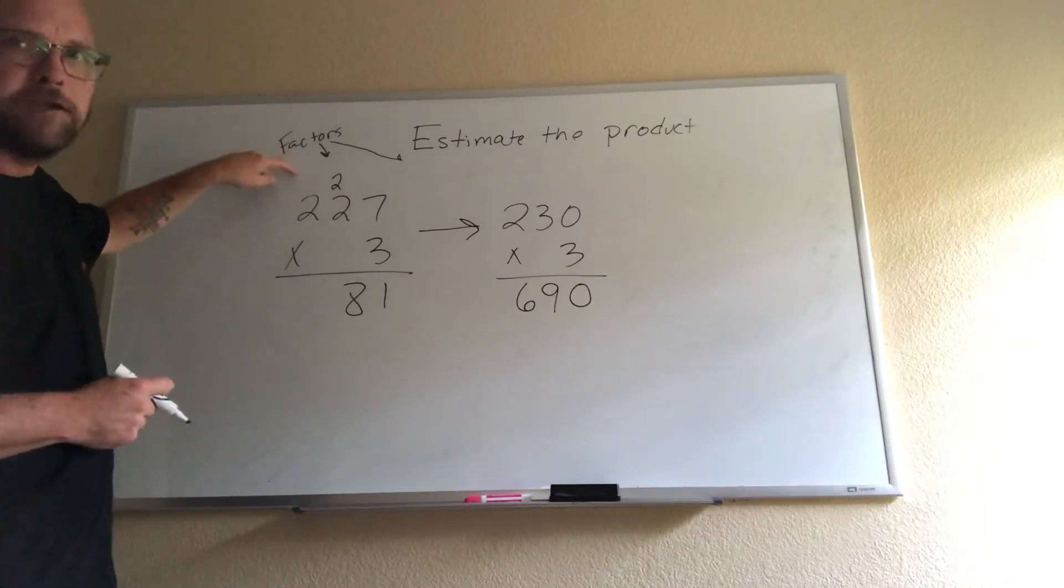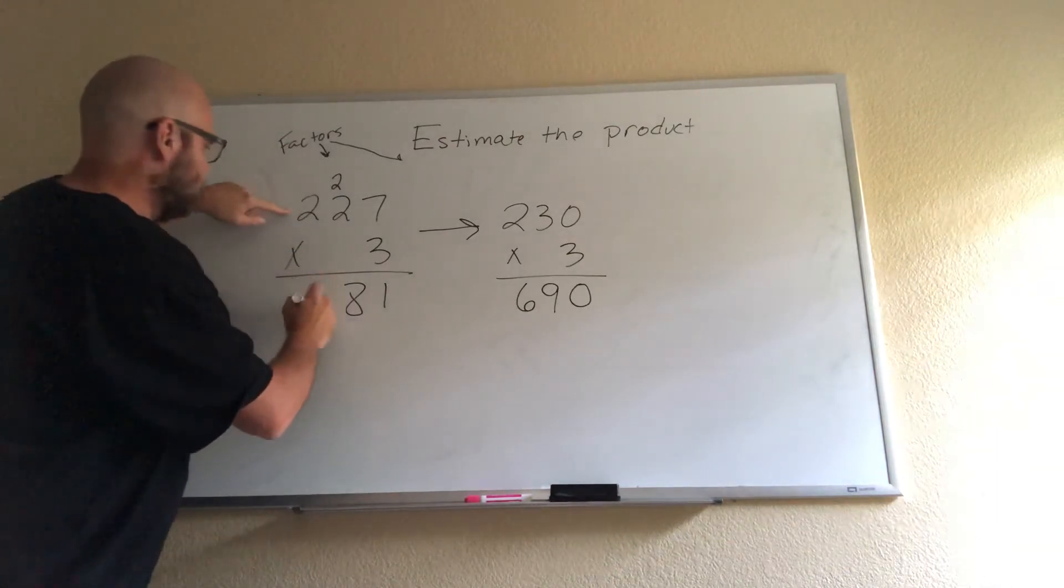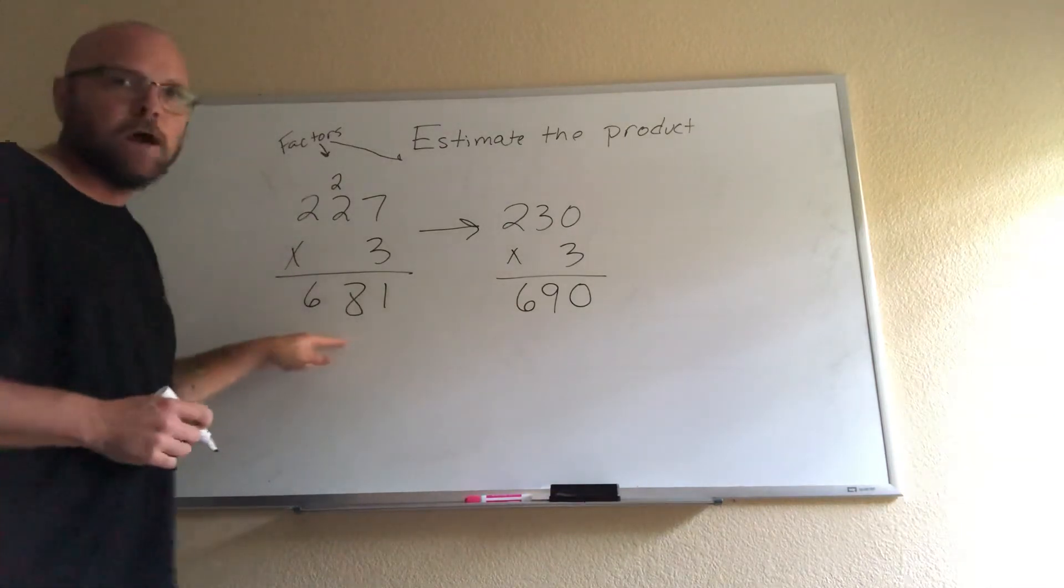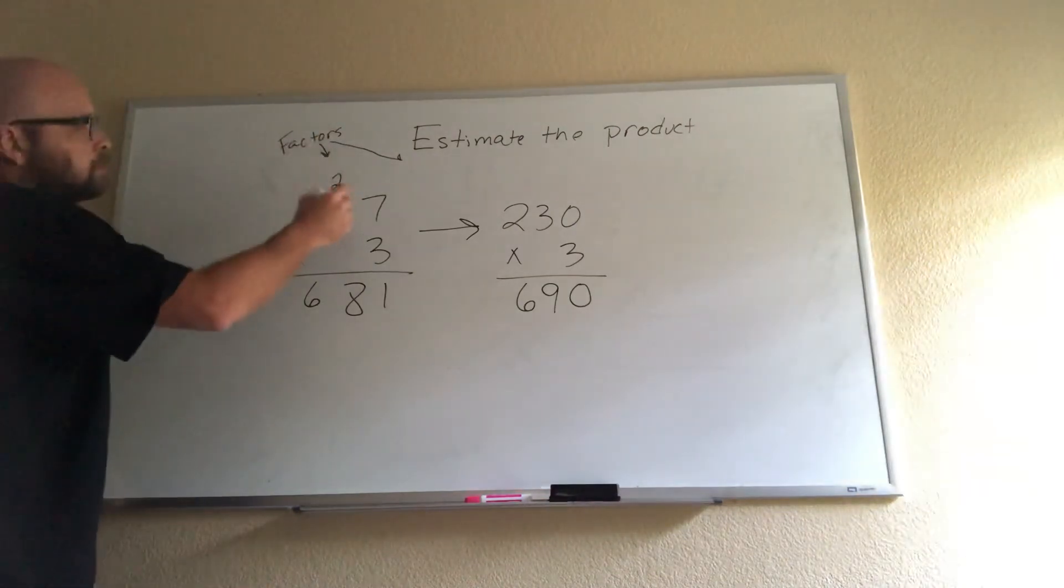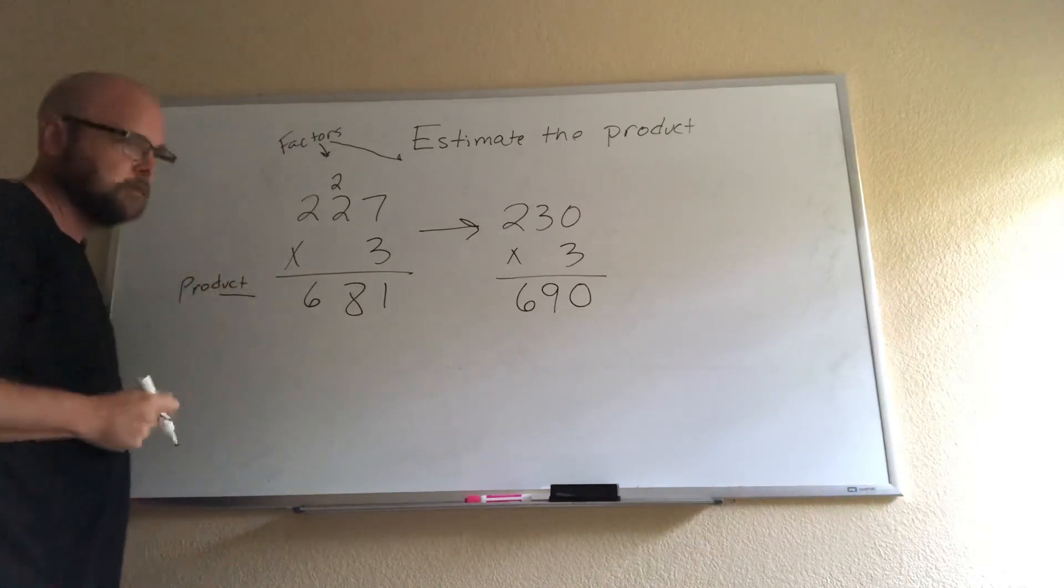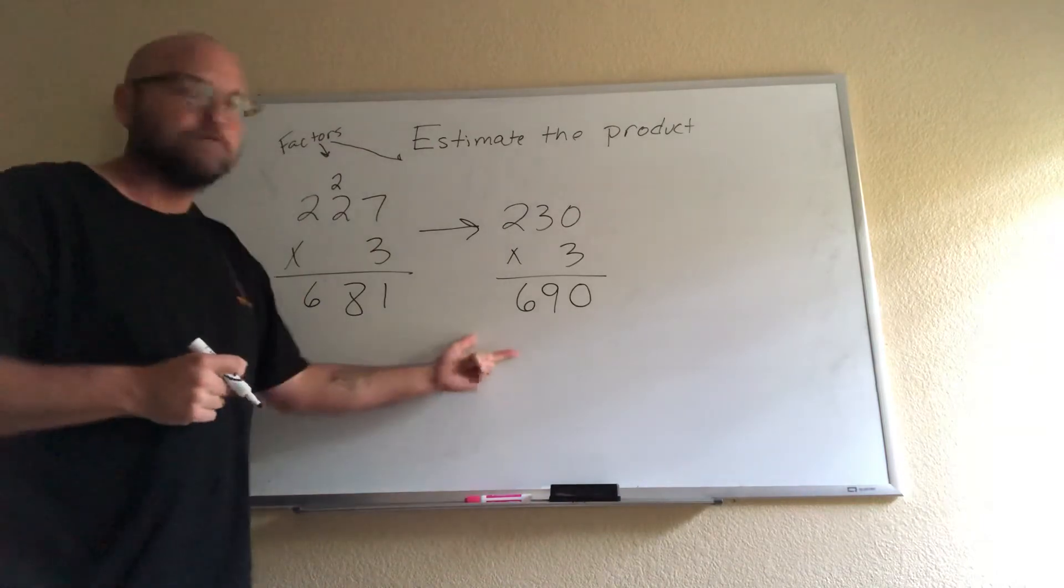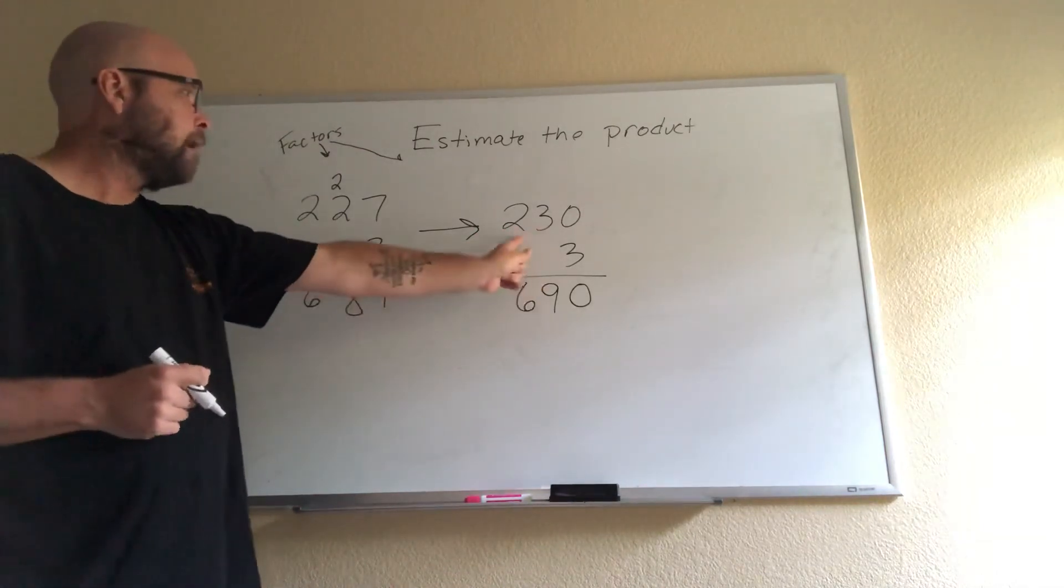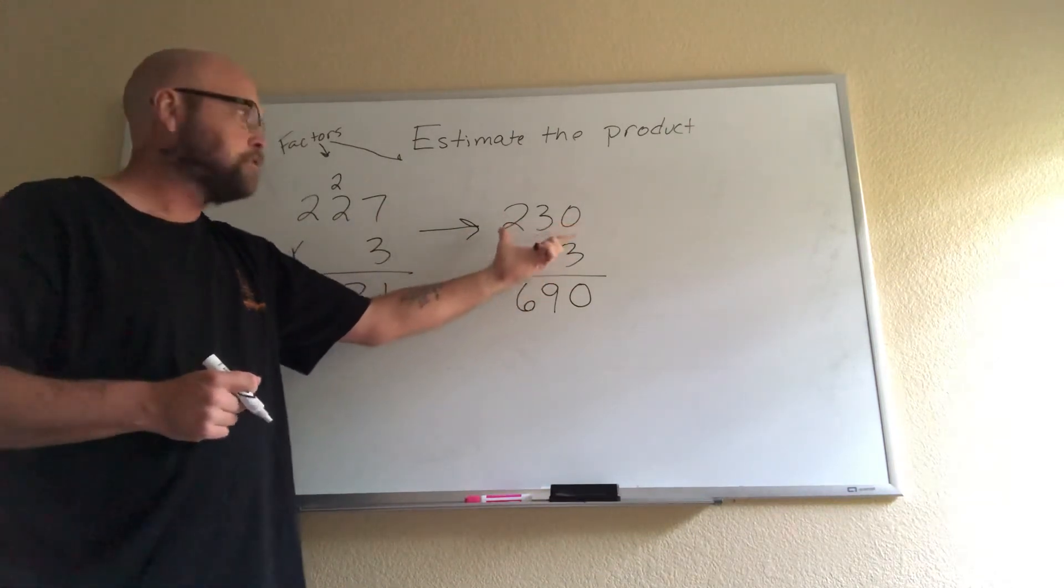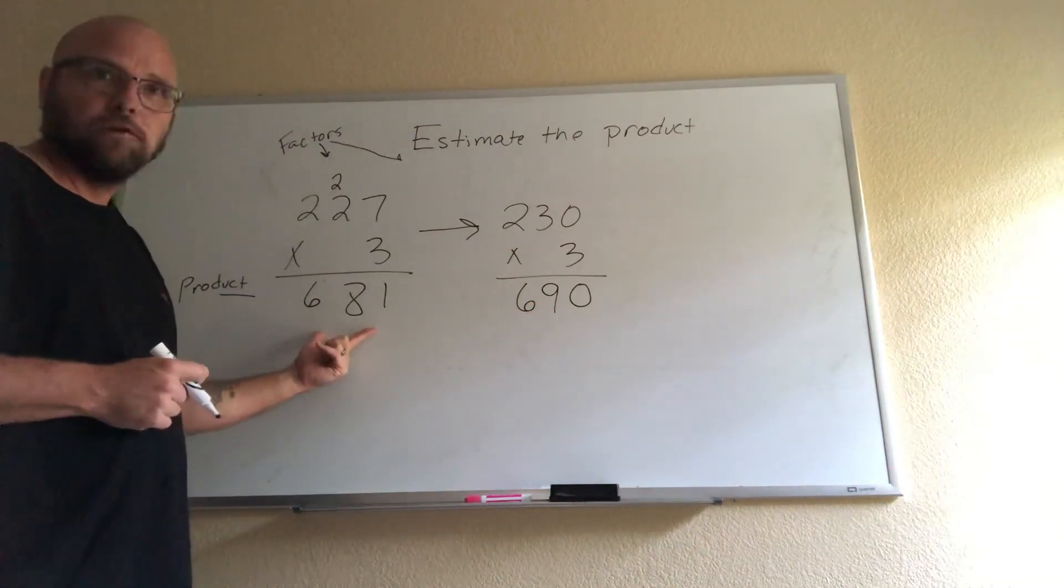I don't have any hundreds to carry over. So then I have 3 times 2 hundreds, which is 6 hundreds. And my estimate and my actual product are close together. So these are factors. This is called a product. And they're close together. Notice I changed 227 to 230, so I increased 227, so that's why my estimate is going to be bigger than my actual product.